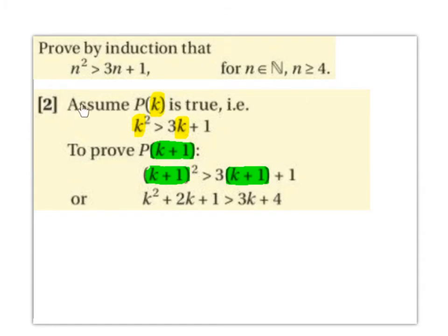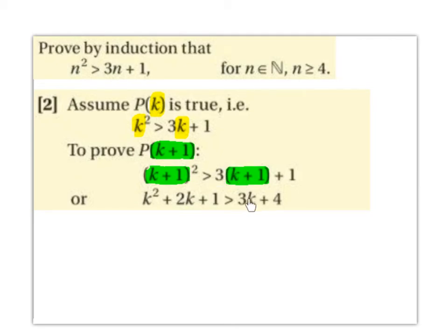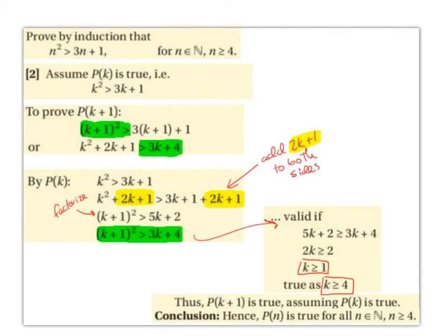Step 2: Assume P(k) is true, i.e. k² > 3k+1. We want to prove P(k+1): (k+1)² > 3(k+1)+1. Expanding: (k+1)² = k²+2k+1, and 3(k+1)+1 = 3k+4. So we need to prove k²+2k+1 > 3k+4.